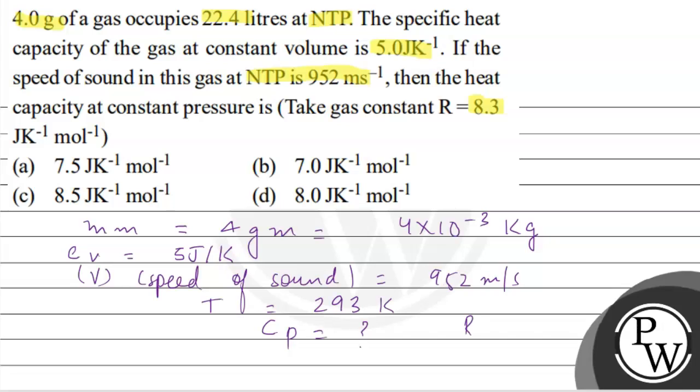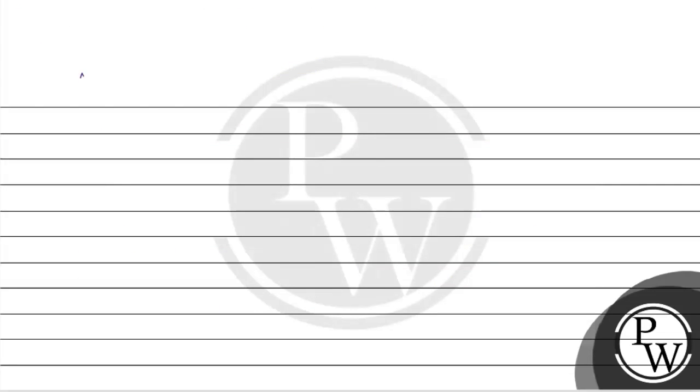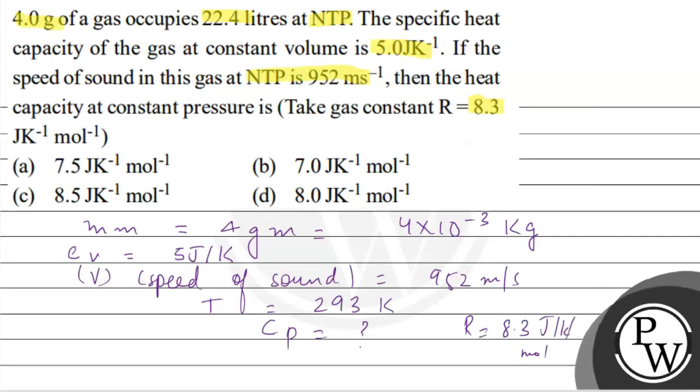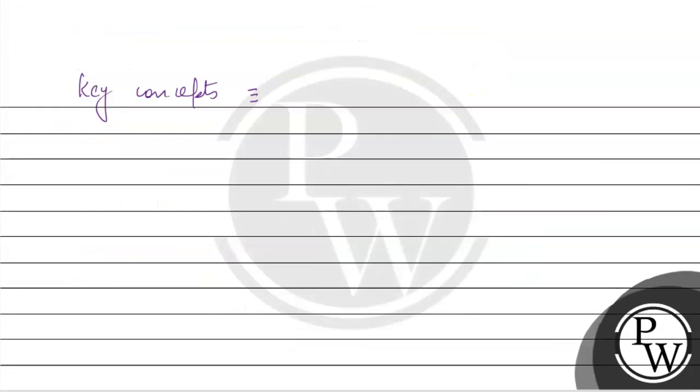Let's discuss key concepts. The speed of sound in any gas is given as V equals square root of gamma R T upon M. What do we find? Cp.